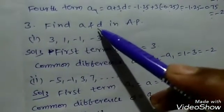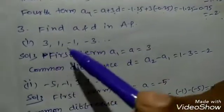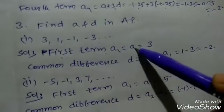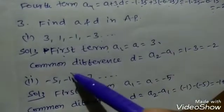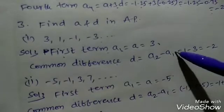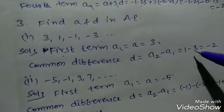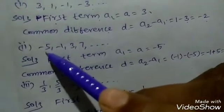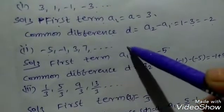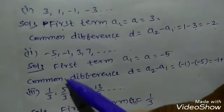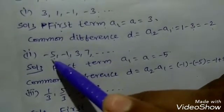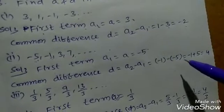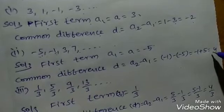Third bit: find a and d, that is first term and common difference, in AP where AP is given. First sequence: 3, 1, minus 5 and so on. First term a1 equals 3. Common difference d equals a2 minus a1, that is 1 minus 3 equals minus 2. Second sequence: minus 5, minus 1 and so on. First term a1 equals minus 5. Common difference d equals a2 minus a1, that is minus 1 minus minus 5, equals minus 1 plus 5 equals 4.